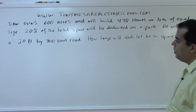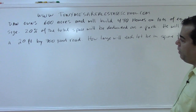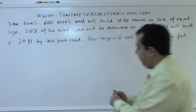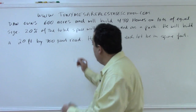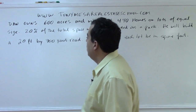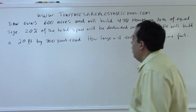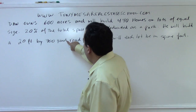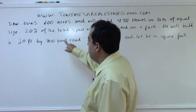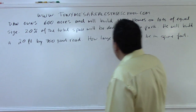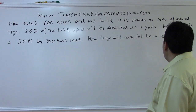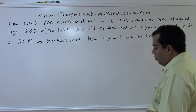He will also build a road that is 20 feet by 700 yards. Notice that road is given in feet by yards, so we'll need to handle that unit conversion. The final question is: how large will each lot be in square feet?